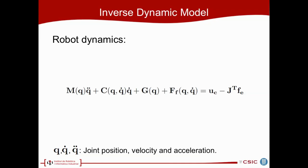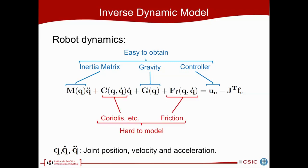Talking about inverse dynamic model, we are modeling some forces of the robot depending on its state. This is the dynamic equation of the robot, where we have, for example, the inertia matrix, the gravity terms, and the controller we apply on the robot. These terms are easy to obtain or to calculate, but on the other hand, we have, for example, the Coriolis and centripetal forces or the frictions, which are much more hard to model.